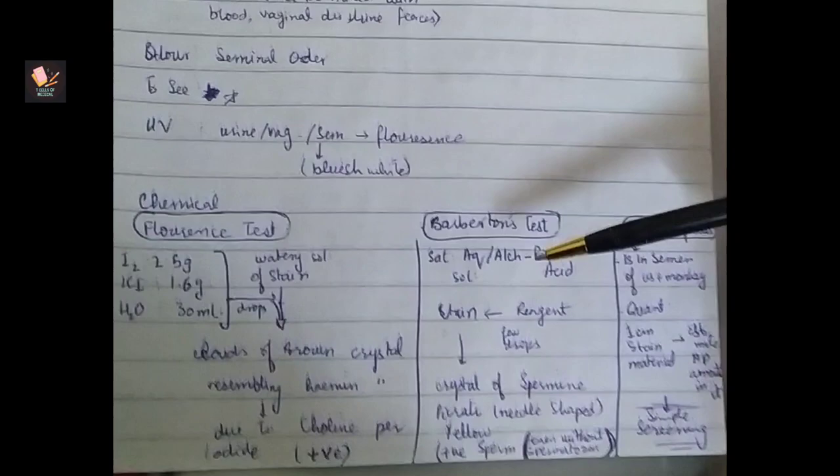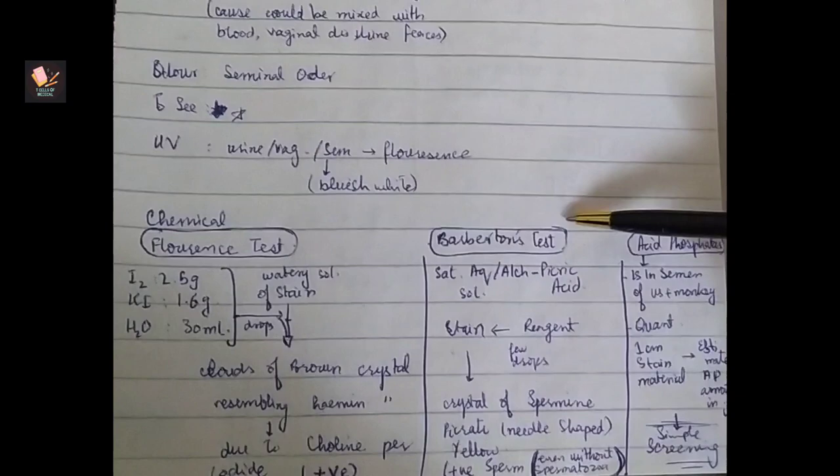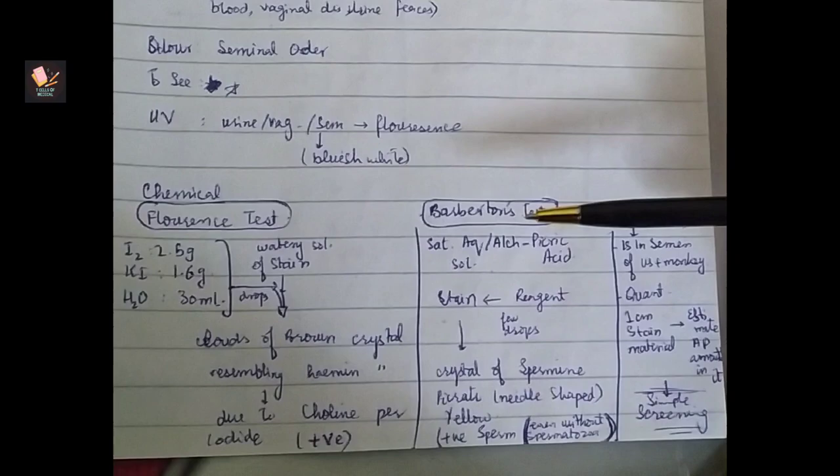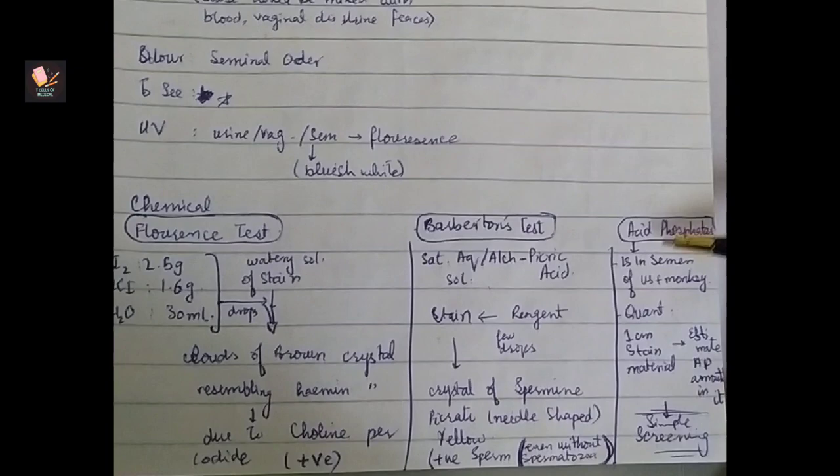Barberion test is saturated alcoholic or aqueous solution, which is the test. You will need needle-shaped crystals. This test does not need that spermatozoa will be positive if the test will be positive.